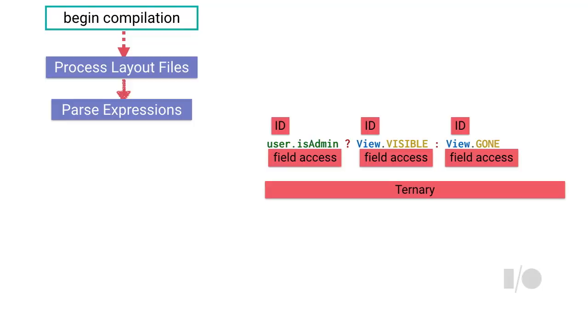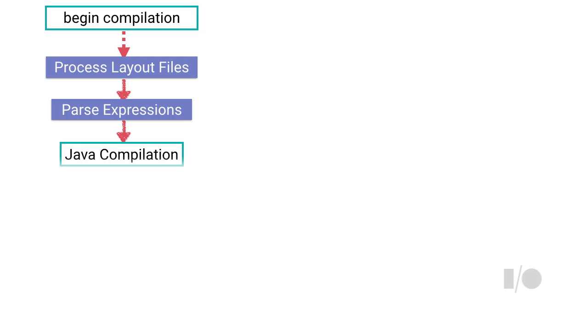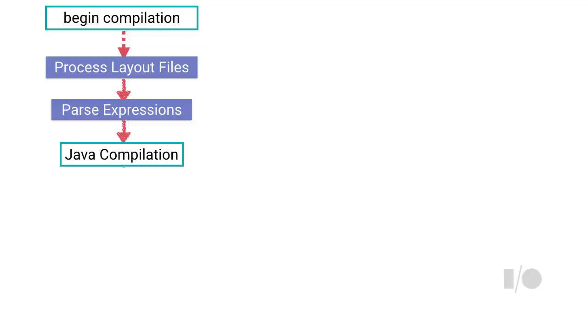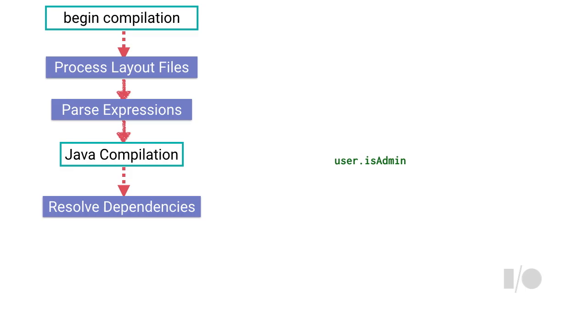The next step: your application Java code gets compiled. While it's being compiled, we have an annotation processor that takes the output from what we parsed from the layout files and tries to understand what it means. So if you had something like user.admin, we know there's a user class declared, we go find that class, then figure out what is.admin means — is it a method call? Is it a field? We figure that out and resolve it. So user.admin means is.admin() Boolean method.